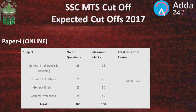For Paper 1: General Intelligence and Reasoning — 25 questions, 25 marks. Numerical Aptitude — 25 questions, 25 marks. General English — 25 questions, 25 marks. However, the change is that General English now carries 50 marks for 25 questions, and General Awareness also carries 50 marks. Overall, 100 questions with maximum marks of 150. The duration of this examination is 90 minutes.